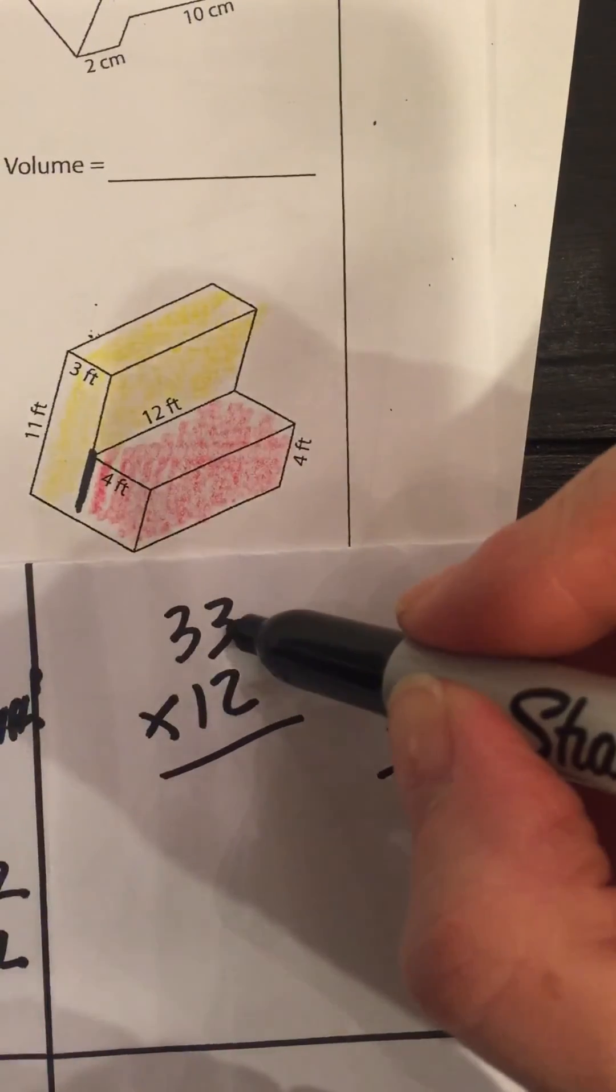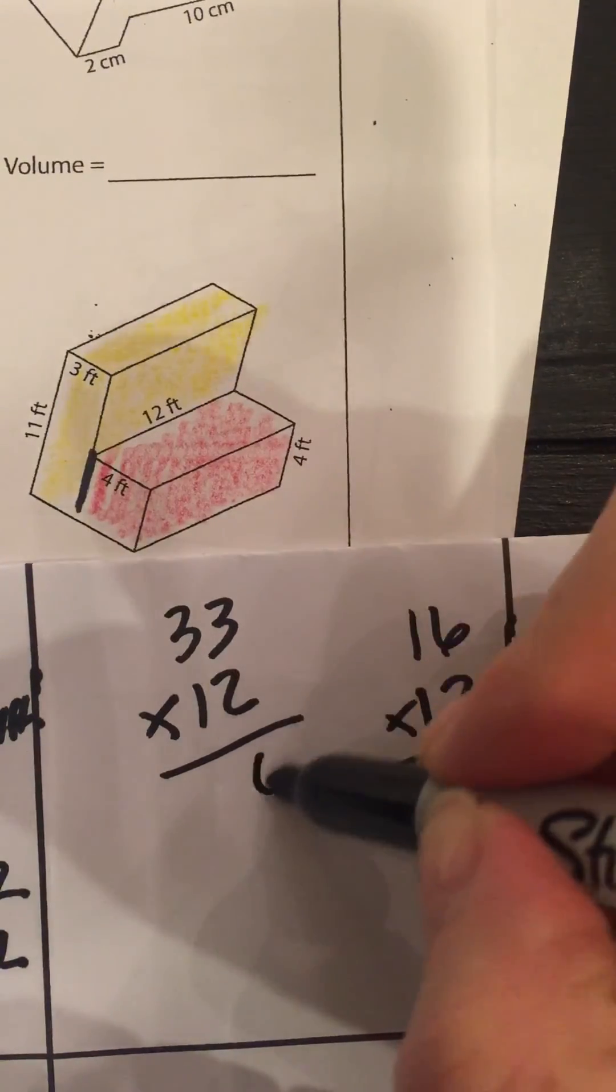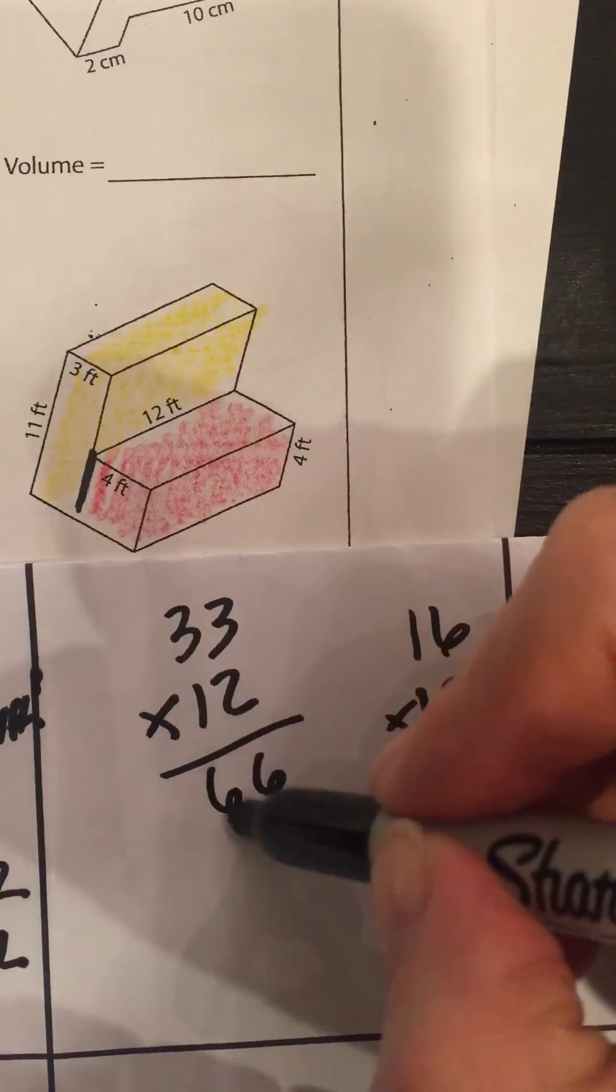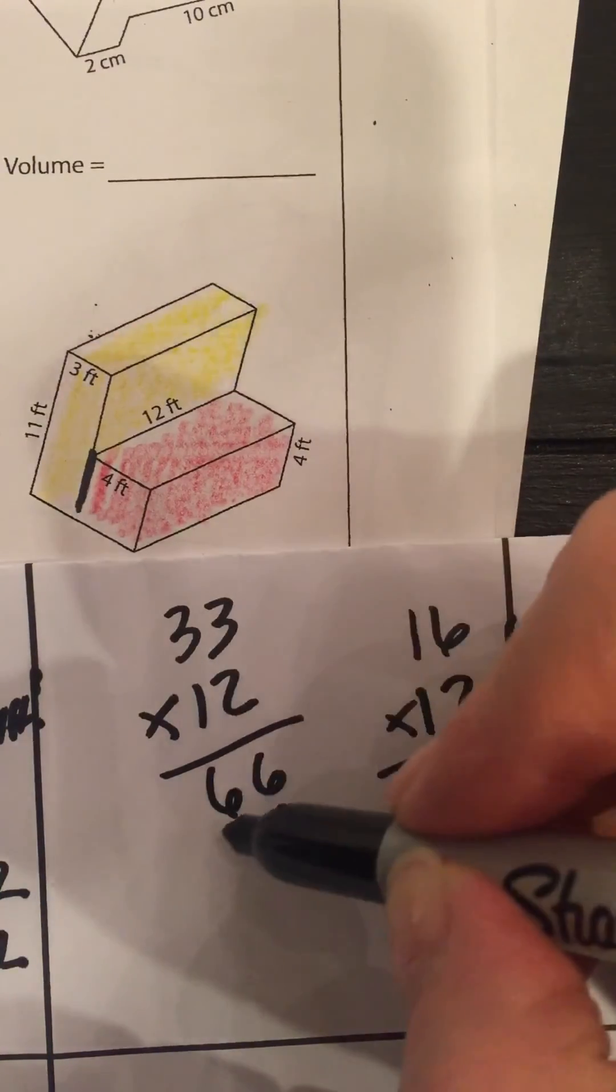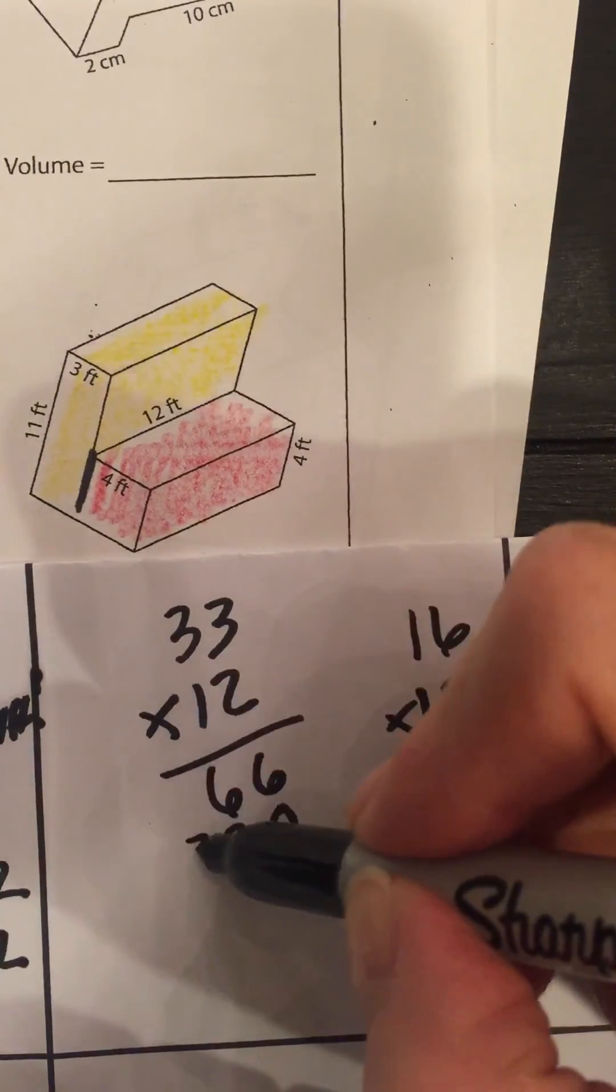Okay, I'll solve this one first. 3 times 2 is 6, 3 times 2 is 6 again, placeholder, 1 times 3 is 3, 1 times 3 again is 3.